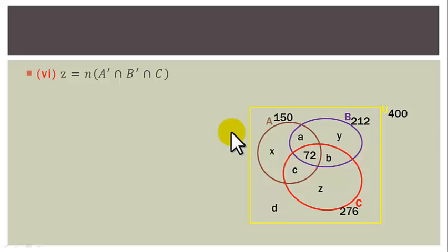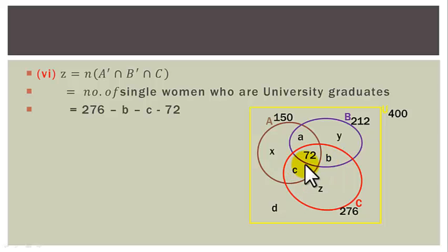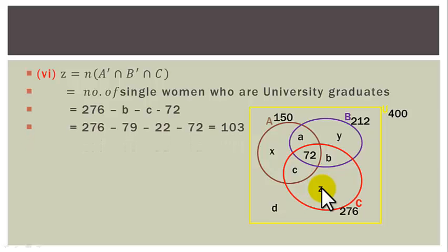Question 6: Z is the number in C but not A and not B — single women who are university graduates. Z = 276 − B − C − 72 = 276 − 79 − 22 − 72 = 103.